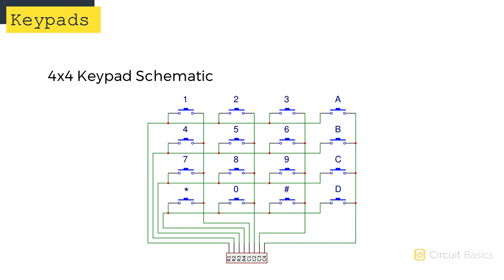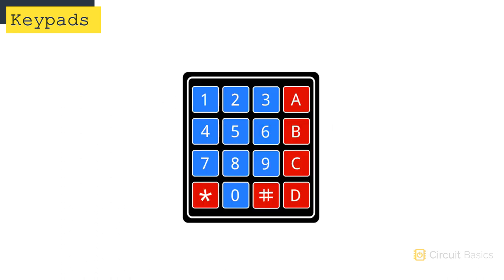Keypads are set up as an array of switches, like a grid. Each button in a row is connected to one side by a conductive trace inside the keypad, and the other side of each button is connected by another conductive trace that forms a column. When you press a button, the row and column traces are shorted, allowing current to flow through the column and row traces. Since the buttons are arranged in a grid, each button pressed creates a unique combination of row and column connections. The Arduino detects which button is pressed by detecting which row and column pins are connected to the button.